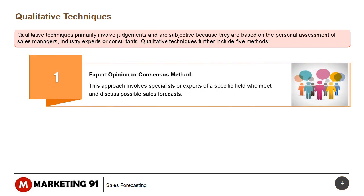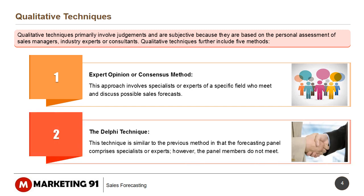The first is the Expert Opinion or Consensus method. This approach involves specialists or experts of a specific field who meet and discuss possible sales forecasts. The Delphi technique is similar, in that the forecasting panel comprises specialists or experts; however, the panel members do not meet.